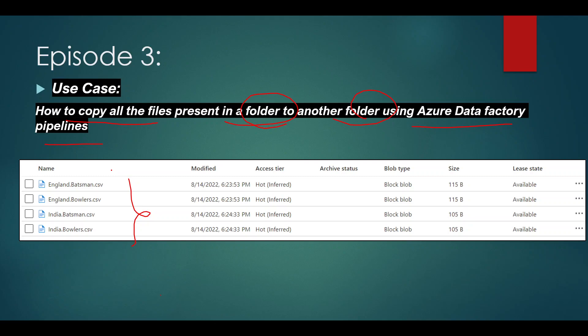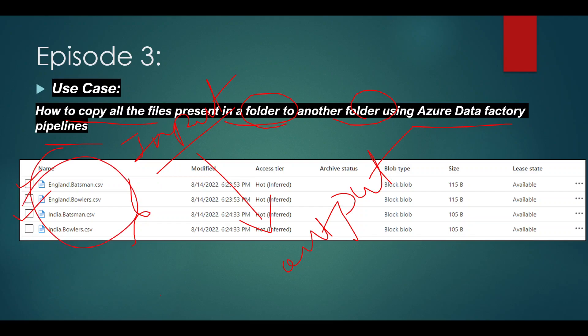We want to copy all the files present in a folder to another folder inside Azure Data Lake Storage using ADF pipelines. Suppose this is our storage account with an input folder containing four files, and we want to copy all the files at once to an output folder. In our previous video we copied files one by one, so please go through that video as well.